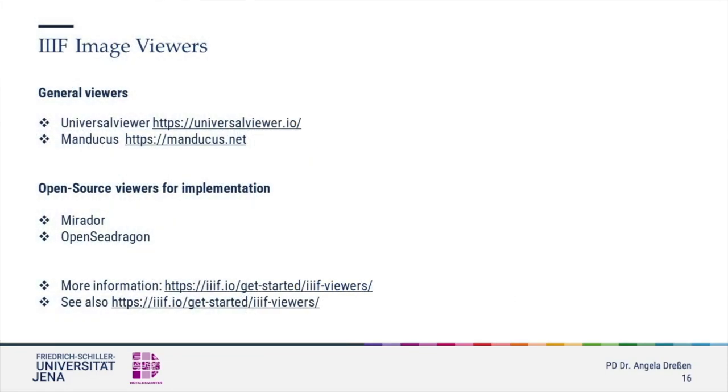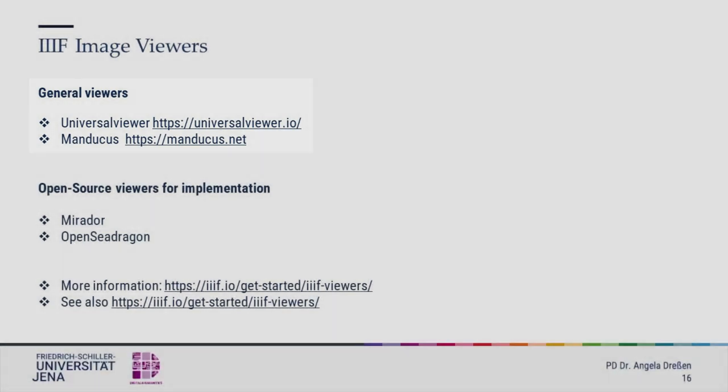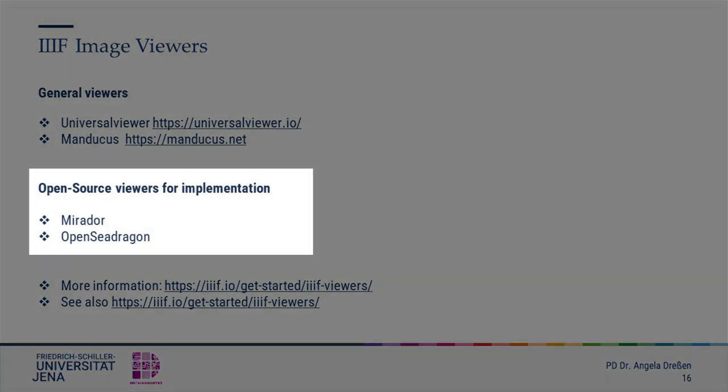Let us now look at some IIIF viewers. The first two viewers, the Universal Viewer and Mirador, are general viewers, which means that they are not connected to any collection. You can take a manifest string into these viewers and watch images from other collections. The second two, Mirador and OpenSeaDragon, are the most used IIIF viewer implementations in library and museum databases. Built into a library or museum catalog, they provide the necessary backbone for working with IIIF APIs.